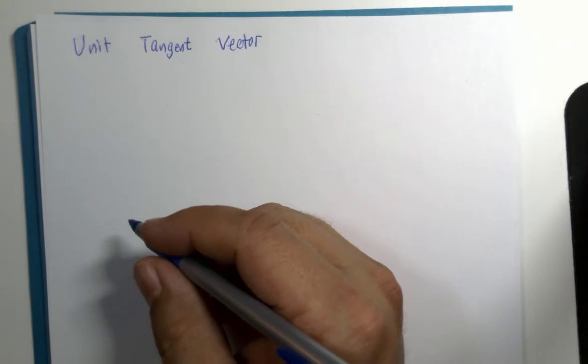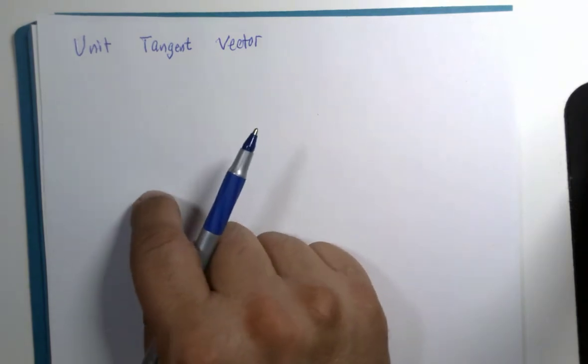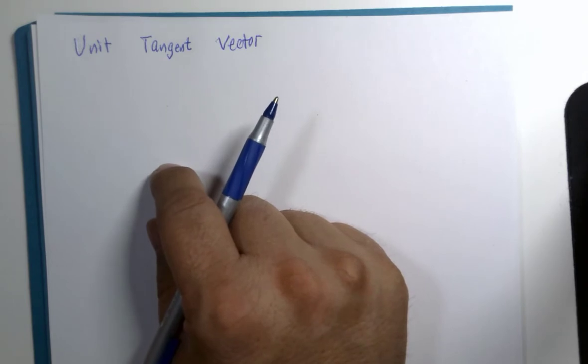In case you haven't figured it out from reading the top of the page, we're going to be considering the unit tangent vector.